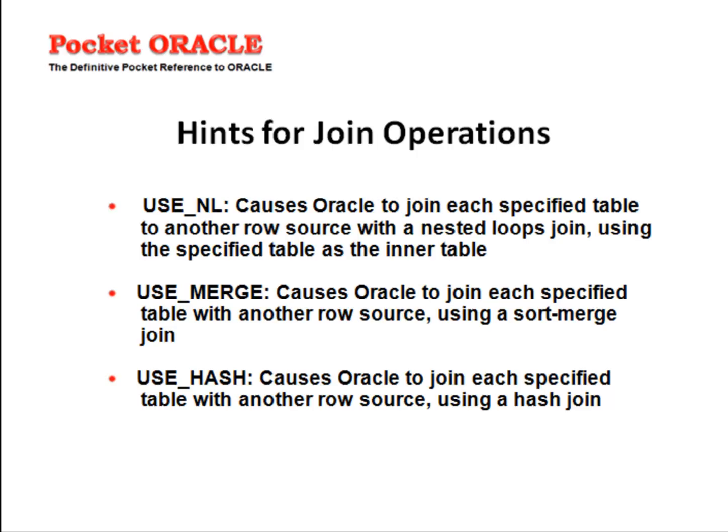With USE_MERGE, no sort is required if the table has indexes, and output is produced only after both the sorts are performed. USE_HASH causes Oracle to join each specified table with another row source using a hash join. The two tables are compared in memory; one is loaded in memory and hash functions are applied.